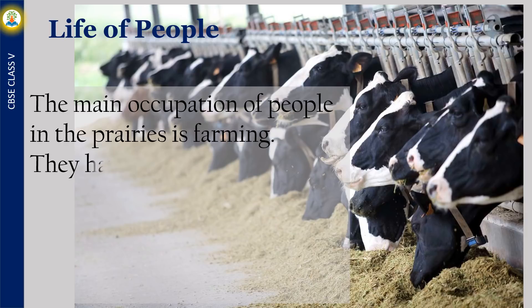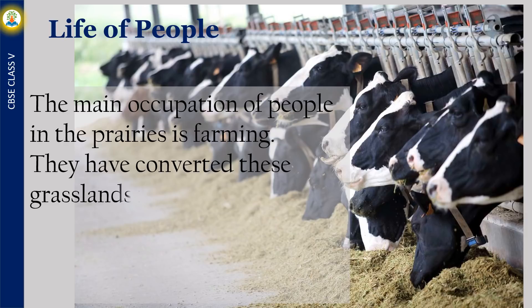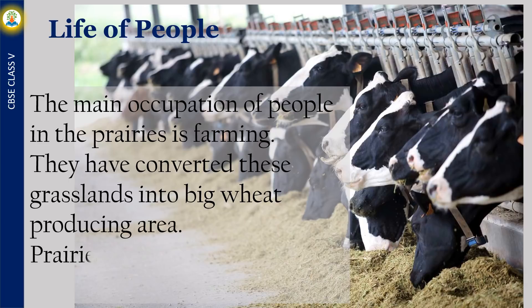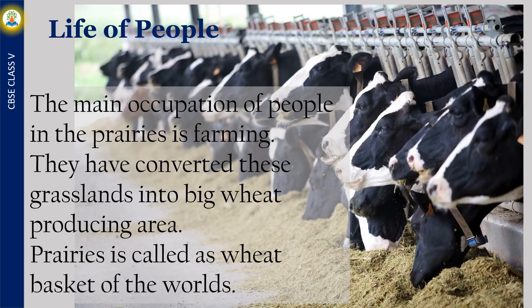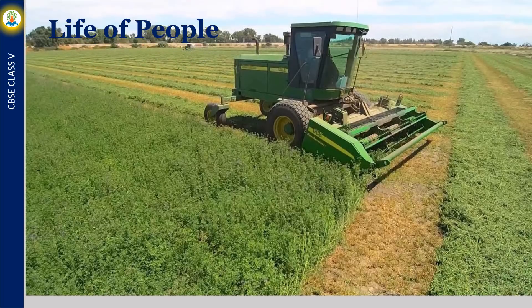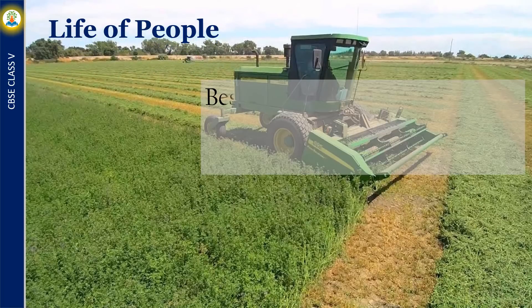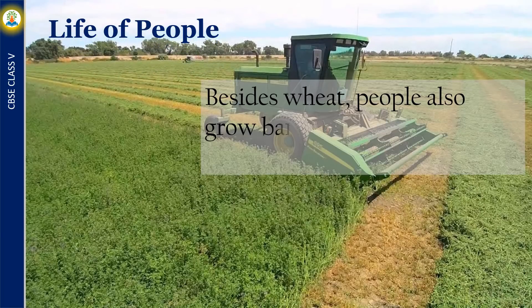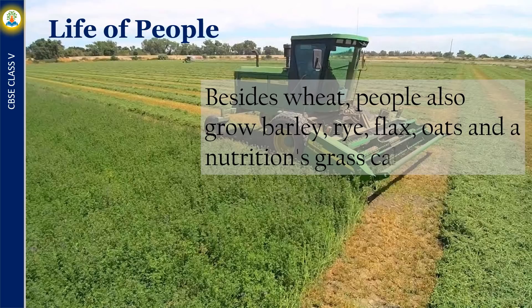The main occupation of people in the prairies is farming. They have converted these grasslands into big wheat-producing areas. Prairies are called the wheat basket of the world. Besides wheat, people also grow barley, rye, flax, oats, and a nutritious grass called alfalfa.